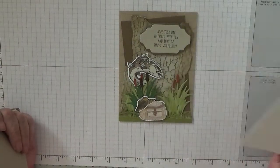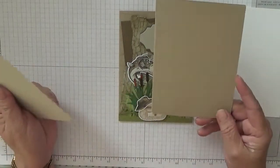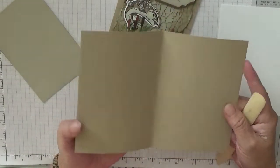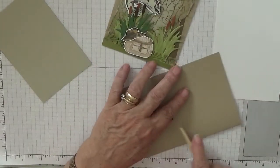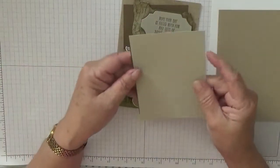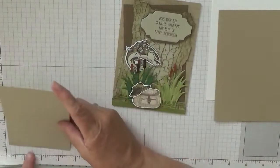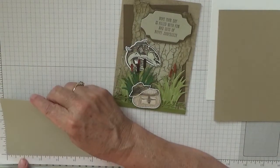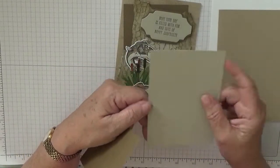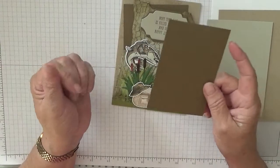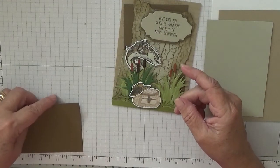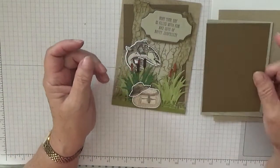For card stock we've got a piece of card for our stamping, a crumb cake piece of card of eight and a quarter by five and seven eighths scored at four and one eighth and folded in half, a piece of Sahara sand that starts off at three and a half by five but we will be ripping it and distressing the edges, and then a piece of soft suede, this is three by four and a half.